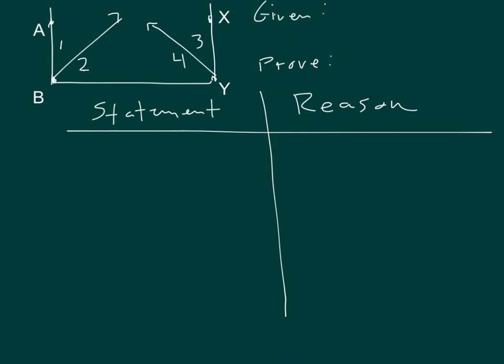The given information is angle ABY is congruent to angle XYB. So visualize that. The big corner angles are congruent. And also that angle 1 is congruent to angle 3.